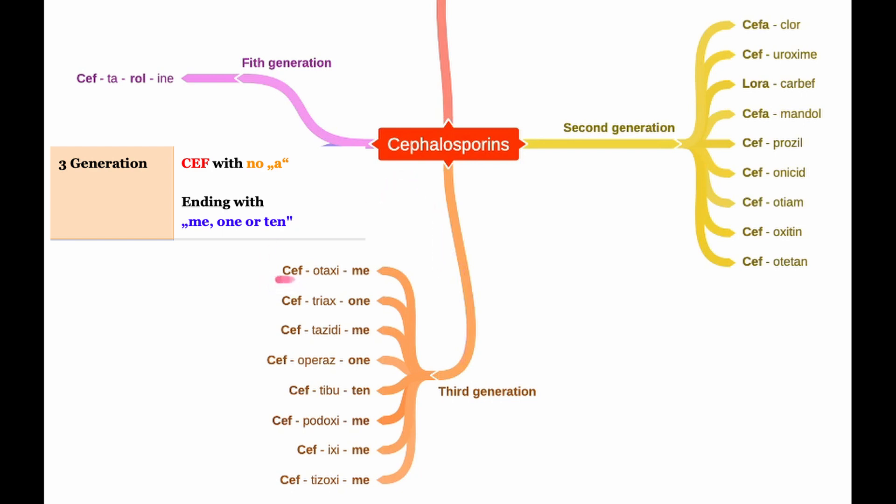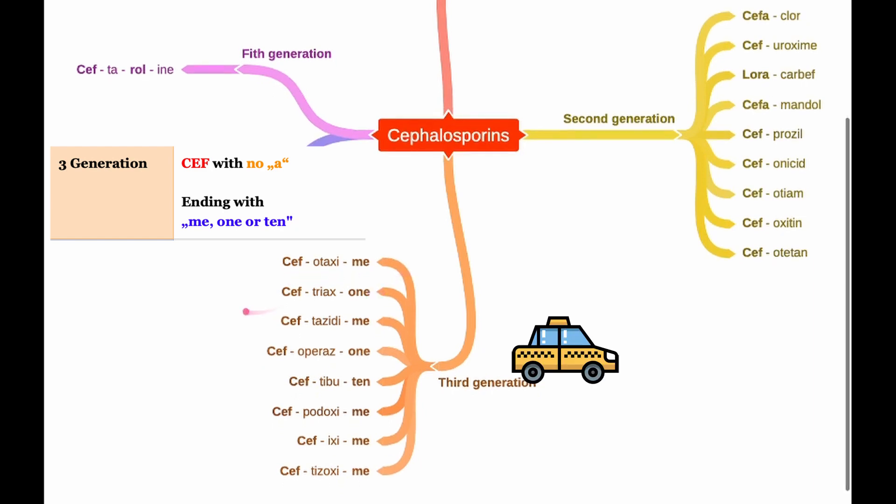You have 'cef' with no 'a', '-me' in the end. For this you have cefotaxime, taxi sounds like taxi. Second one ceftriaxone, cef in the beginning, '-one' in the end, triax sounds like triax, like literally triax, three axes.